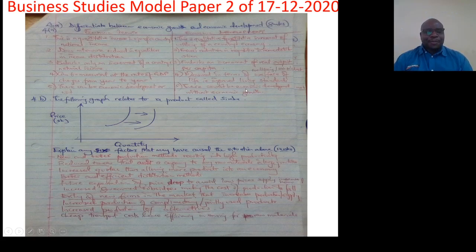Question number four B. The following graph relates to a product called Simba. We have the price on the Y axis and quantity on the X axis. So this shift is a supply shift or supply curve shifting to the right, or an increase in supply of products or increase in production of products without necessarily increasing the price.